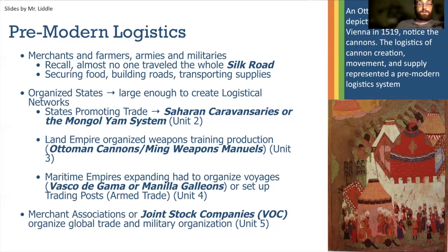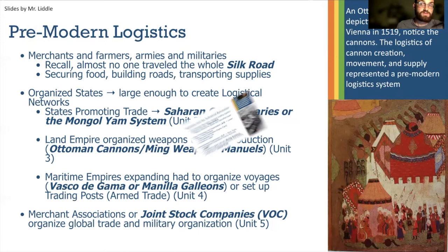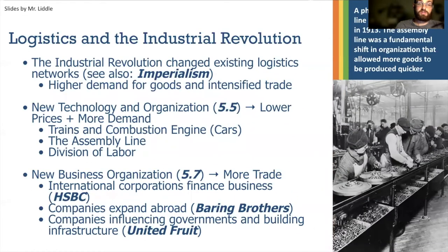Moving into Unit 5, we see the first international companies — joint stock companies like the East India Company — that organized large global trade endeavors and military operations. These were early examples of non-governmental private organizations for trade and military force. The Industrial Revolution then radically reshaped logistics through new technology such as trains and the combustion engine, assembly line production, and the division of labor. New goods at faster rates meant lower prices, meaning they needed to be transported further. Imperialism could be thought of as building new logistics networks by force.